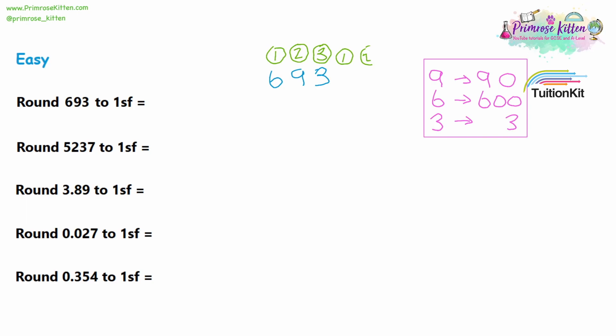Using our rounding method, we are going to rule off after the first significant figure, because we are rounding to one significant figure. We are going to keep the numbers on the left and lose the numbers on the right. So keeping the six, we're losing the nine and the three. The first number we're losing is the nine — that is a five or higher, so we are going to round it up to a seven. The six is in the hundreds column, so we should be writing 700. When we lose the nine and the three, we fill them in with zeros to maintain place value. So the answer is 700.